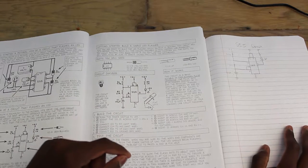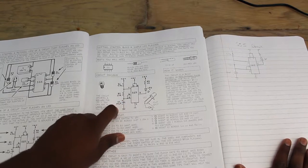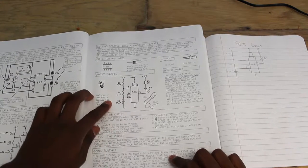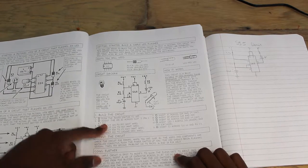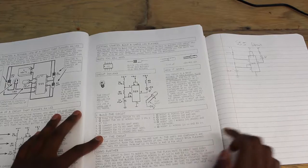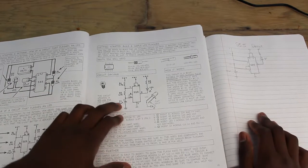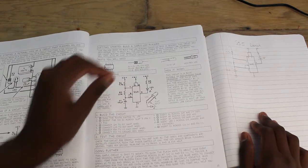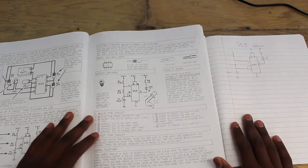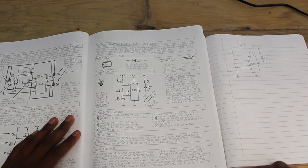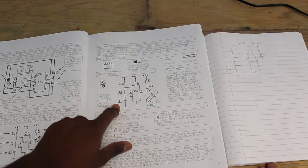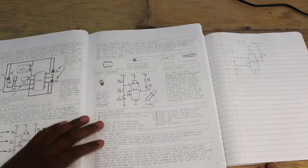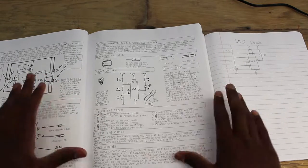If you change the 10 microfarad capacitor to a 100 microfarad capacitor, we actually change the flash rate to about once every 2 seconds. So capacitance and the size of the capacitor and the resistance before the capacitor creates how often the LED will flash on and off. If you have a larger capacitor it'll take more time for it to charge to full and if you have higher resistance before the capacitor then it'll take longer time for it to fill as well. You're just changing the amount of time it takes for the capacitor to fill up.